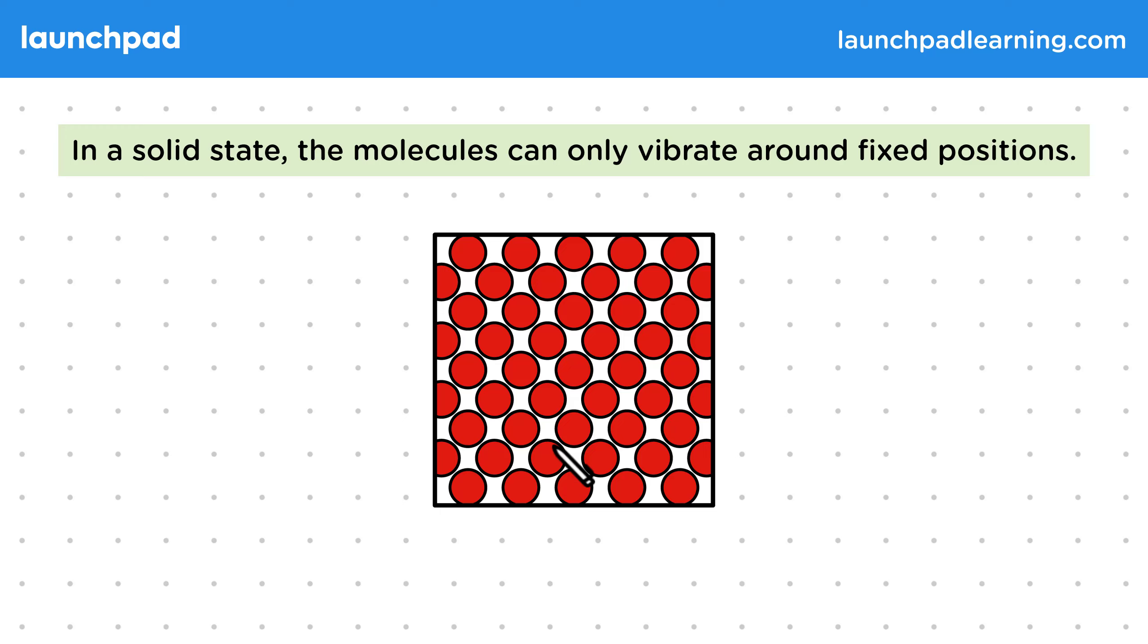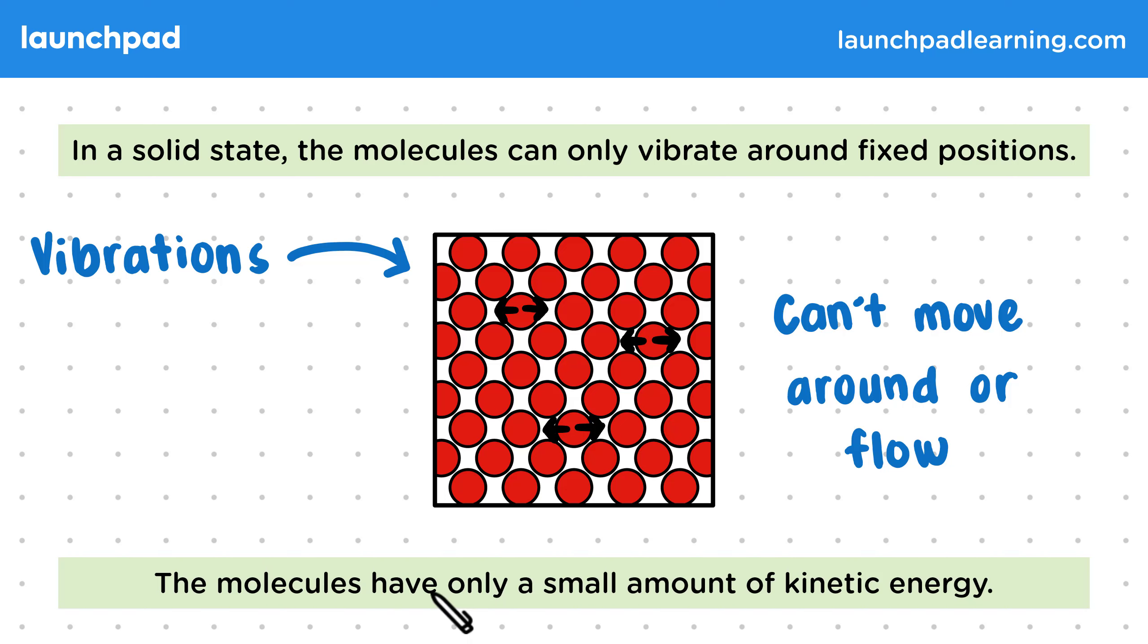This means the molecules are only able to move slightly back and forth. In other words, they only vibrate in place, which is the only motion they have. They can't move around or flow. So since the molecules don't move much, they only have a small amount of kinetic energy.